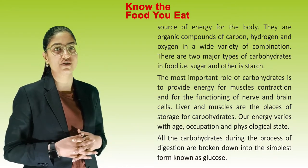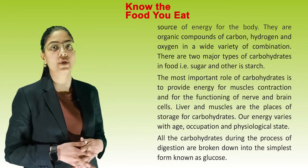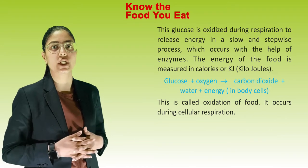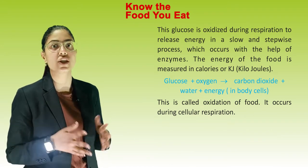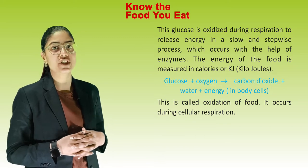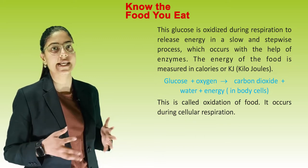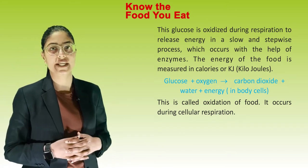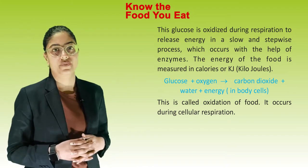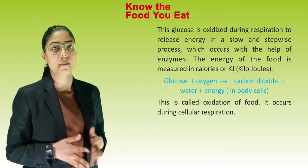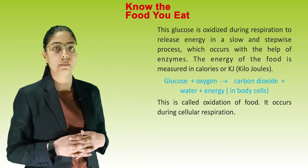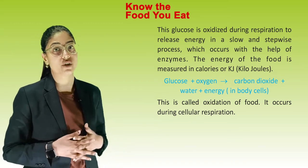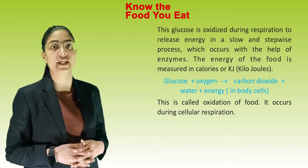All carbohydrates during the process of digestion are broken down into the simplest form known as glucose. This glucose is oxidized during respiration to release energy in a slow and step-wise process which occurs with the help of enzymes. The energy of the food is measured in calories or KJ (kilojoules). Glucose plus oxygen gives carbon dioxide plus water plus energy in our body cells. This is called oxidation of food, and it occurs during cellular respiration.